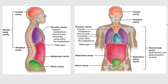What divides the thoracic cavity from the abdominal pelvic cavity is the diaphragm. The diaphragm is a skeletal muscle — similar to your biceps brachii or rectus abdominis — that separates thoracic and abdominal regions. The abdominal pelvic cavity is divided into abdominal and pelvic cavities. In the abdominal cavity, you have viscera — lots of organs and parts of the digestive system. In the pelvic cavity, you have reproductive organs, urinary bladder, and the last part of the GI tract, like the rectum.